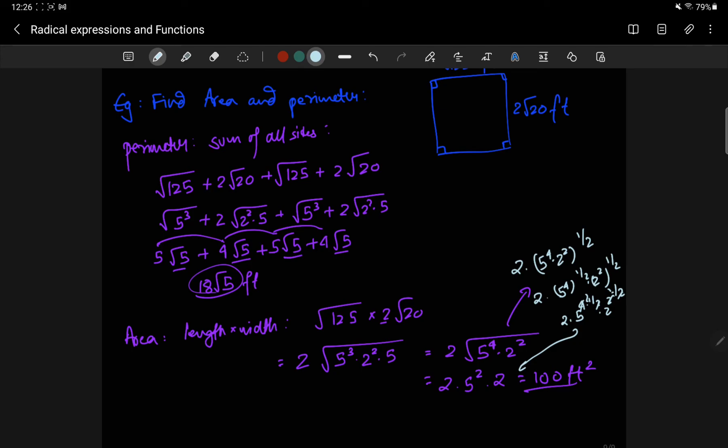Or, you could just think of it as 5 to the 4 means there are 5 copies. It's 5 times 5 times 5 times 5, and you can make 2 pairs. So, you pull out a 5 squared to get your area.